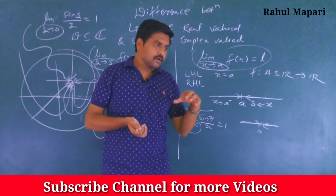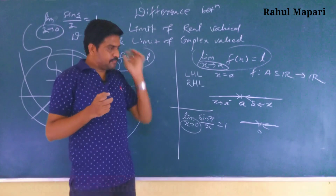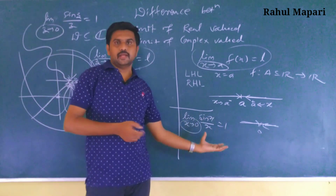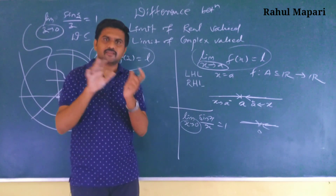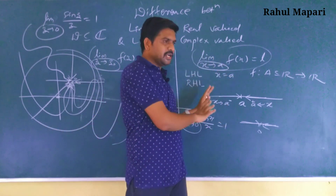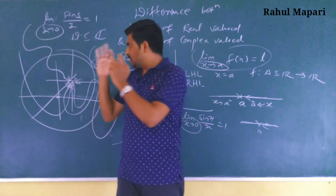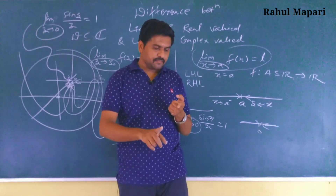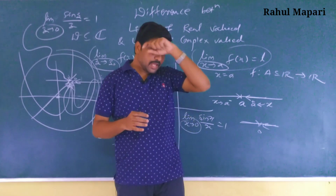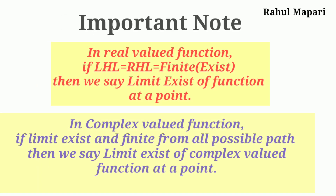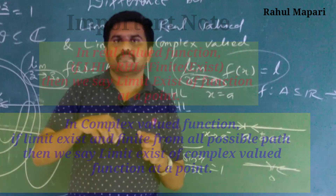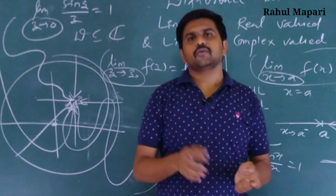Many examples may seem equal in real and complex analysis, such as trigonometric identities, but we cannot transfer all identities from real to complex as they are — there are some changes. In summary, in real analysis we have only two paths and that is why the concept of left-hand and right-hand limits exists. In complex analysis there is no concept of left-hand, right-hand, up-hand, or down-hand limit. Thank you for watching.